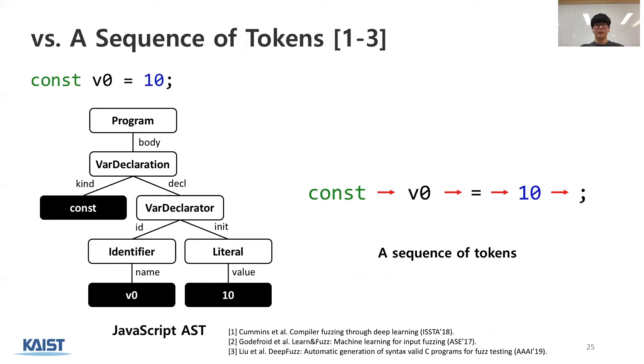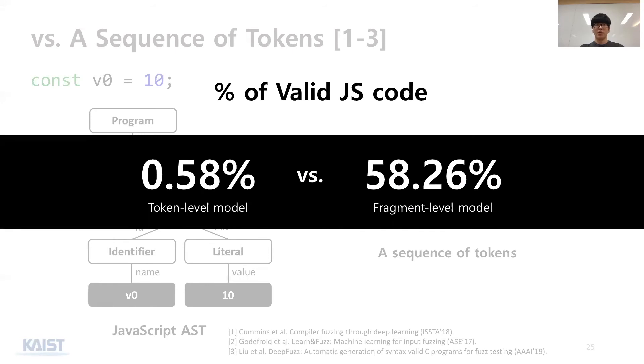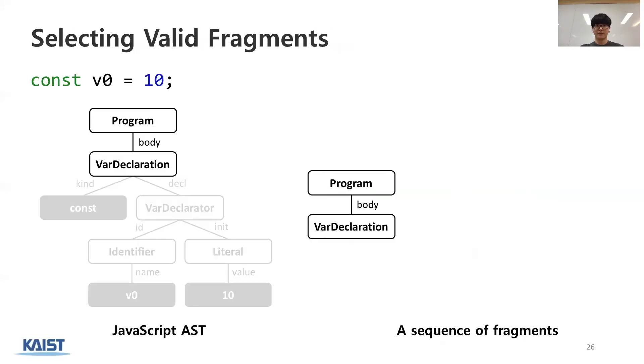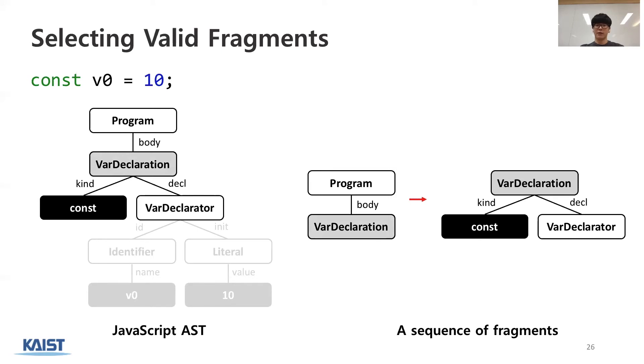Unlike this representation, several previous studies modeled the code as a sequence of tokens as shown on the right side. However, according to our evaluation, most of the JS code created by a token-level model were invalid. Among the 100,000 JS code, only 0.58% of JS code created from the token-level model were valid. This difference stems from the capability of selecting valid next fragments. Let's assume that given this fragment, Montage wants to predict the next one. Since we represent JS code with fragments, we know that the next fragment should start with variable declaration node, like this one. Therefore, with this representation, Montage can always append valid fragments.